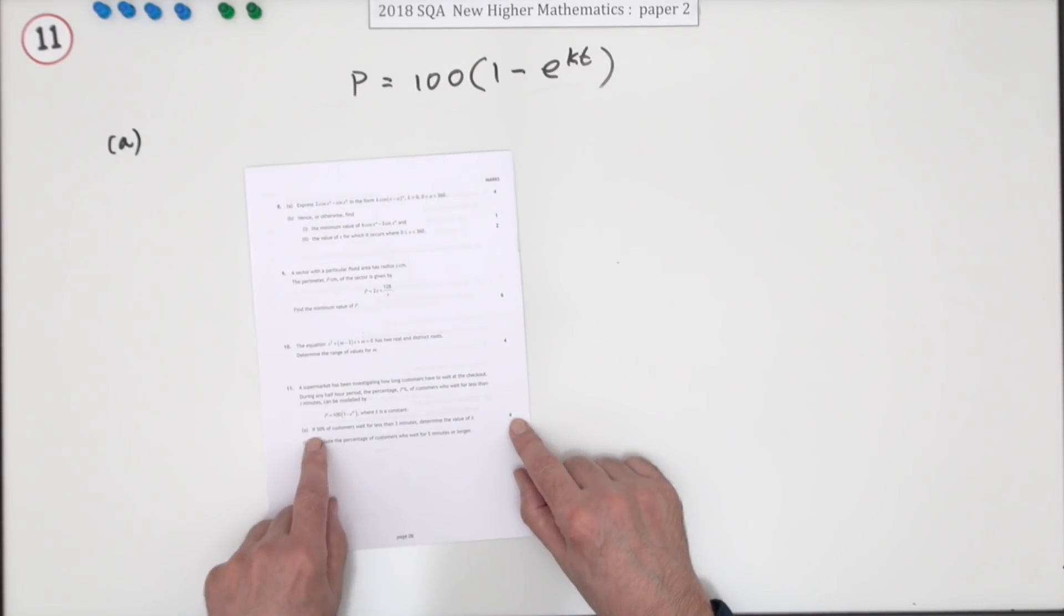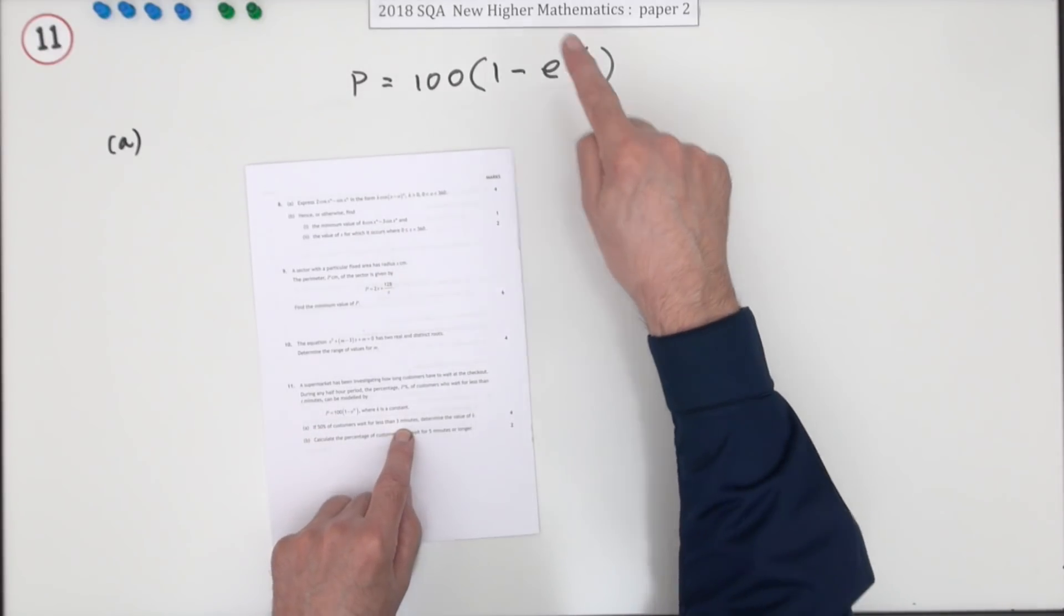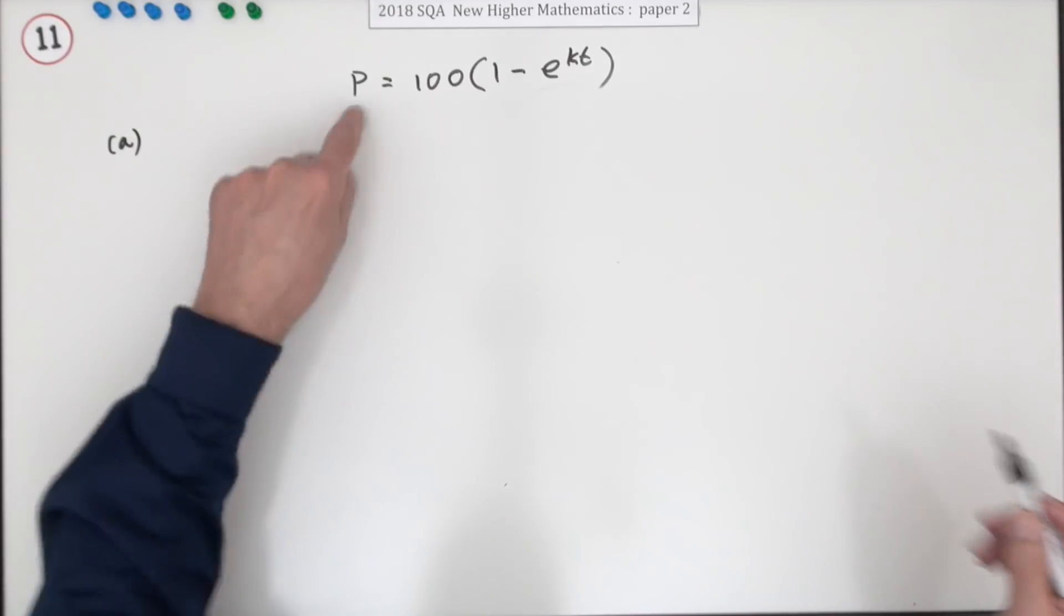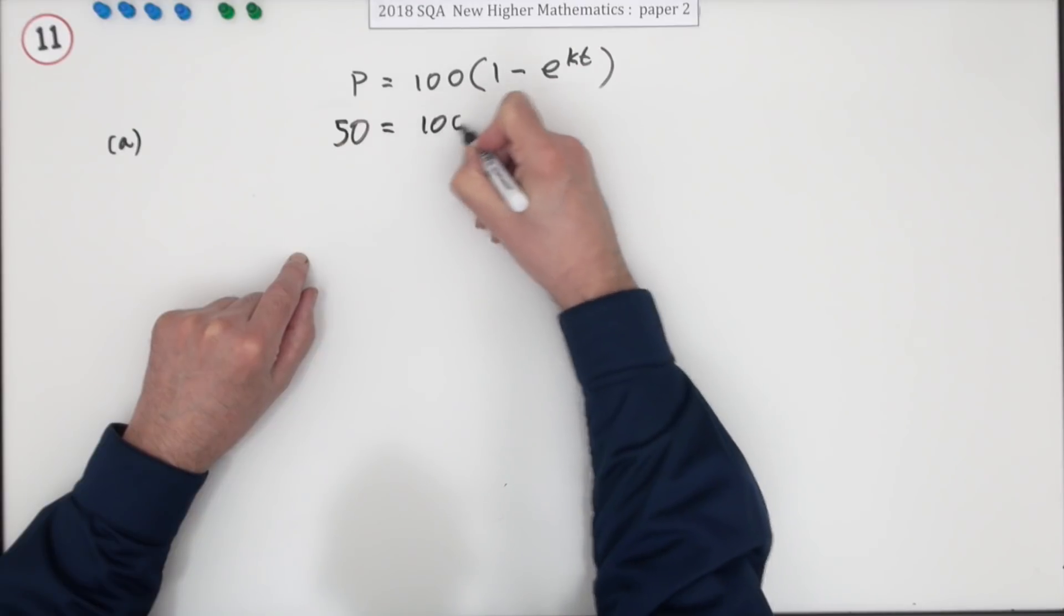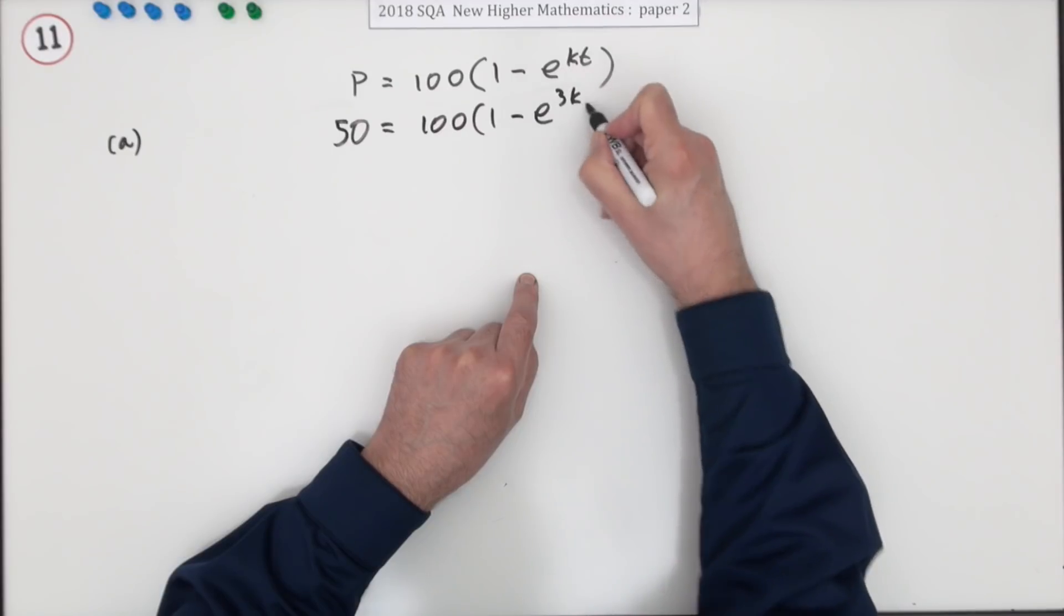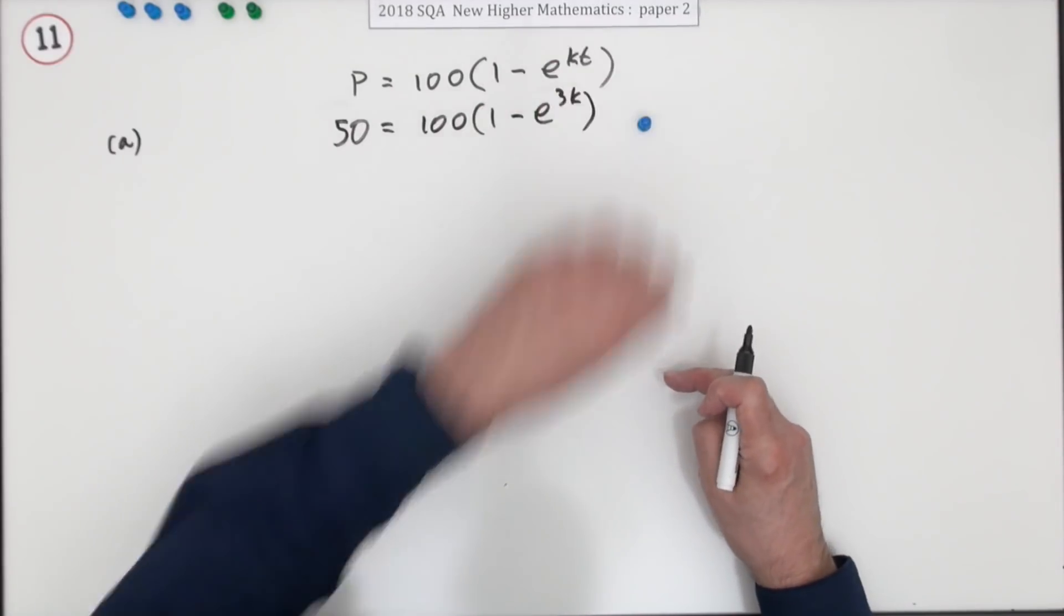So for four marks here in part a, if 50% wait for less than three minutes, what's k? So let's just put the numbers in. 50%, I know that number. I know that number, I know that function. I don't know k, but I know t is 3. So pop in the 50, pop in the 3, and you get a mark.